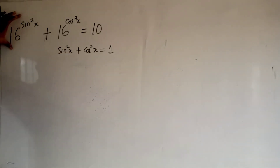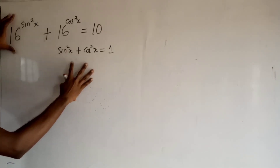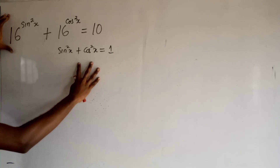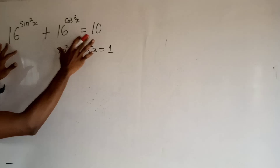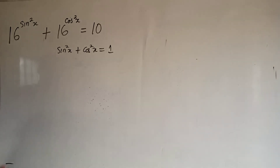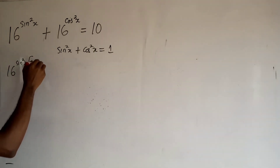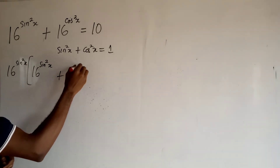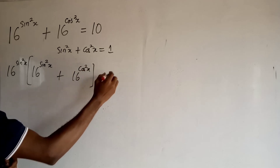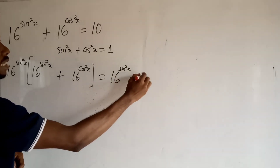For this equation, we have several ways of solving it, but the method I'm about to show you will be easy. The first thing I want to do is multiply both sides of this equation by 16 to the power sin squared x. So I have 16 to the power sin squared x, plus 16 to the power cos squared x, is equal to 16 to the power sin squared x, times 10.